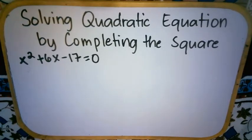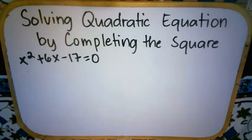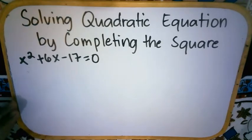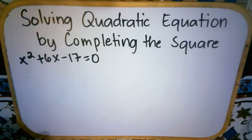The next example is x squared plus 6x minus 17 equals 0. This is a perfect example for this topic. If you go back to the first example, that one could actually be solved by factoring — try it later and you'll get the same answer as when we solved it by completing the square. Any correct method gives the same result. This second example is perfect because it is not solvable by factoring. It can be solved by completing the square or by the quadratic formula, but that will be our next topic. For now, we solve by completing the square.